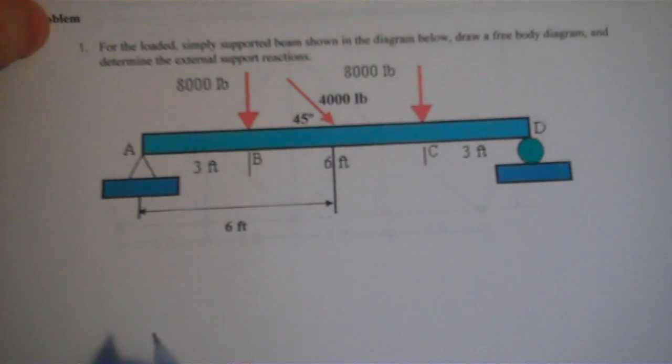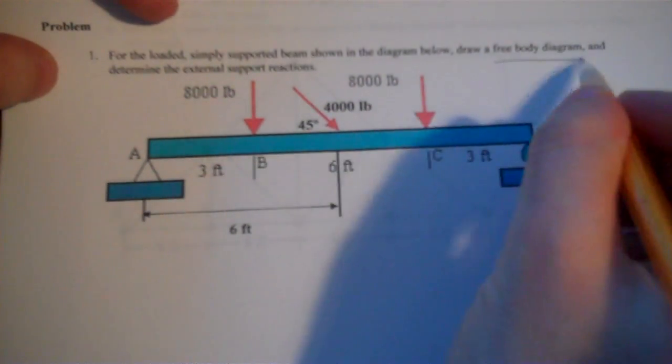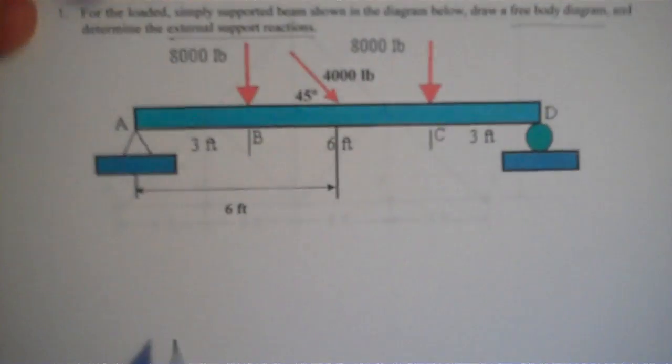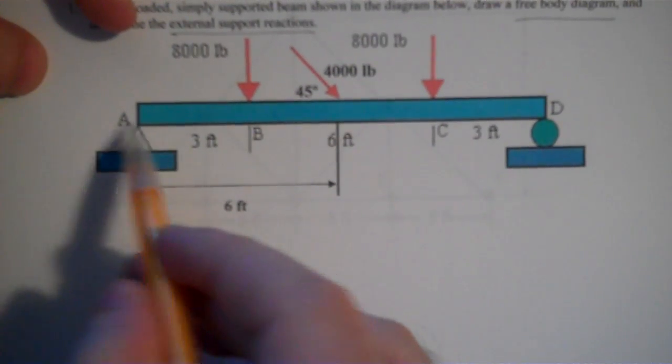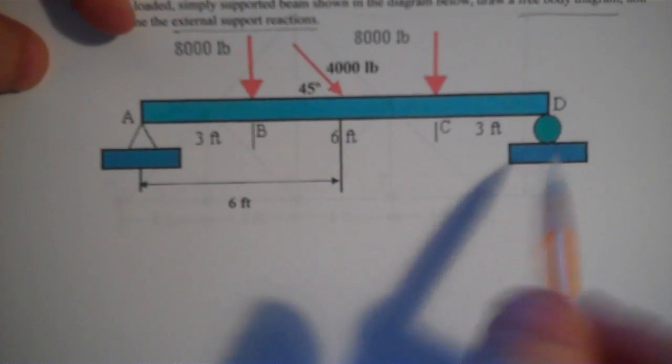All right, so let's tackle this one. Simply supported beam, turn the diagram, draw a free-body diagram, determine the external support reactions. So we have a hinge over here, so we're going to have two forces from that, and we have a roller over here, so I'll have one force from that.